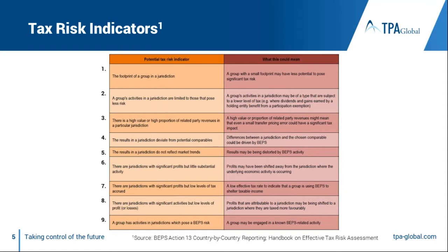Indicator number six focuses on where the FTEs are and how that compares to profitability — do we have a low level of FTEs with high profitability or vice versa? Taking indicators six, seven, and eight together, you look at FTEs and significant people functions. Running ratio analysis on both gives completely different pictures of where profitability arguably should sit. If tax authorities see anomalies there, they start asking questions. Indicator 15 is also interesting: if your cash tax paid stays relatively low but accrued is significantly higher year-on-year, that suggests you are booking a reserve for tax exposures — a FIN48 situation in US GAAP terms — which signals to tax authorities that you believe you have tax risk.